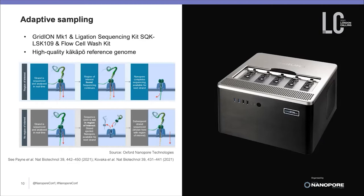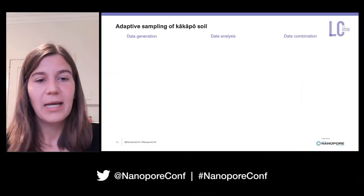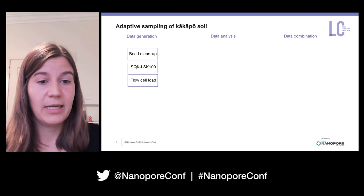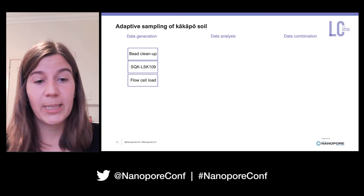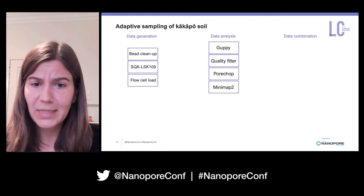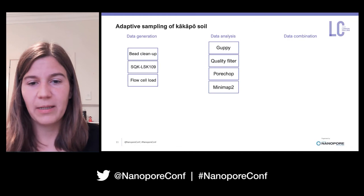Briefly, what adaptive sampling can do is allow you to provide certain genomic sequences and either enrich or deplete for those sequences, or do it adaptively based on intermediate results. In my case, I wanted to enrich for the one-gigabase kakapo reference genome. For data generation, I cleaned up my DNA with a bead cleanup, used the ligation sequencing kit, loaded the flow cell, and then used a standard nanopore downstream approach including Guppy and Porechop, then Minimap2 to align reads to the kakapo reference genome.